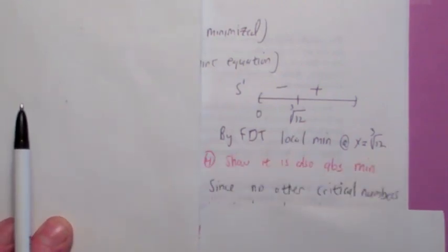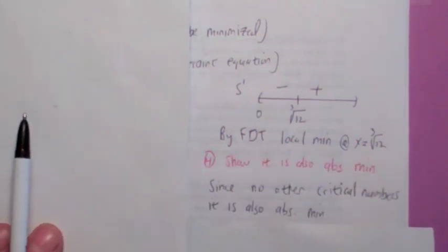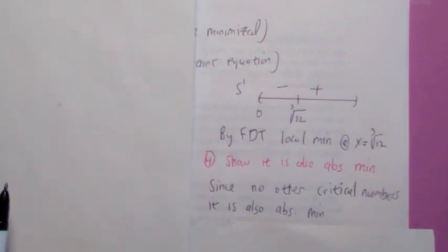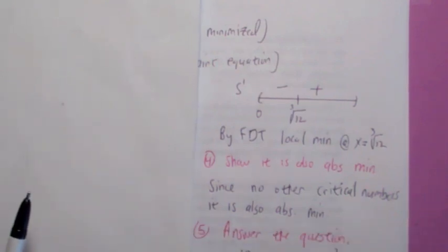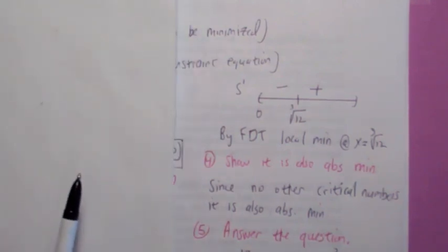How do you show it's an absolute minimum? Same reasoning. Just say that since there's no other critical numbers, it has to be an absolute minimum. What is the answer to the question? The value of x is ∛12. What is the value of y? It's going to be 12 divided by ∛12 squared, which equals x. So we showed it's a cube.